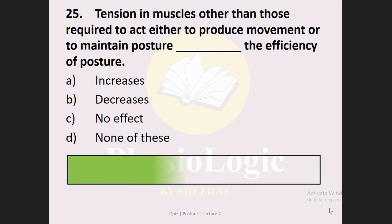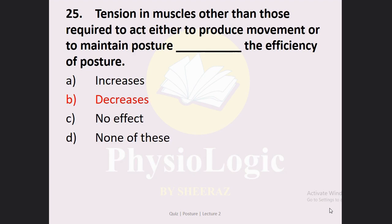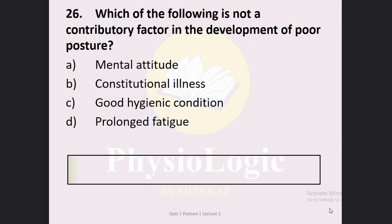Next MCQ: The tension in muscles other than those required to act — either to produce movement or to maintain posture — dash the efficiency of posture. Option A: increases. Option B: decreases. Option C: no effect. Option D: none of these. The correct option is Option B: decreases. When there is tension in extra muscles beyond those required to act, compensatory muscle work is needed, which decreases the efficiency of posture and increases the demand for muscle work.